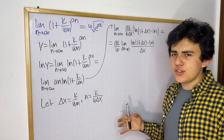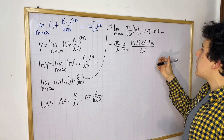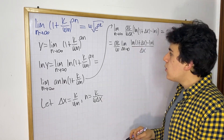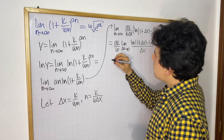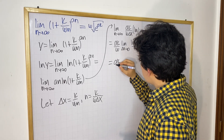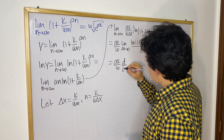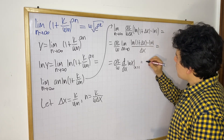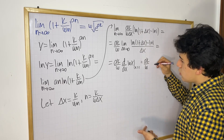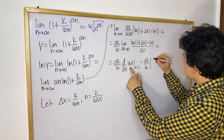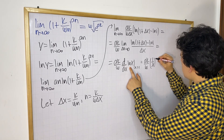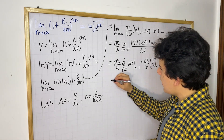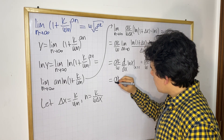It is now pretty easy to see that this is the derivative of natural log evaluated at x equals 1. The a·k over w is just a coefficient. So we can simplify this as (ak over w) times the derivative of ln(x) evaluated at x equals 1. The derivative of ln(x) is 1 over x, evaluated at x equals 1, which gives ak over w.